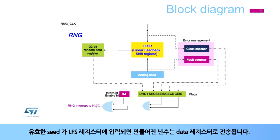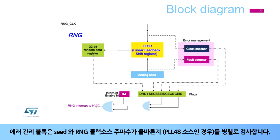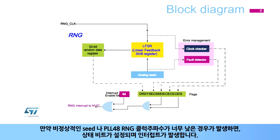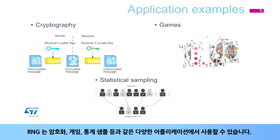The contents of the linear feedback shift register are transferred into the data register when a significant number of seeds have been introduced into the LFSR register. In parallel, an error management block verifies the correct seed behavior and the frequency of the RNG source clock if a PLL48 source is used. Status bits are set and an interrupt is triggered if an abnormal sequence is detected in the seed or if the frequency of the PLL48 RNG clock is too low.